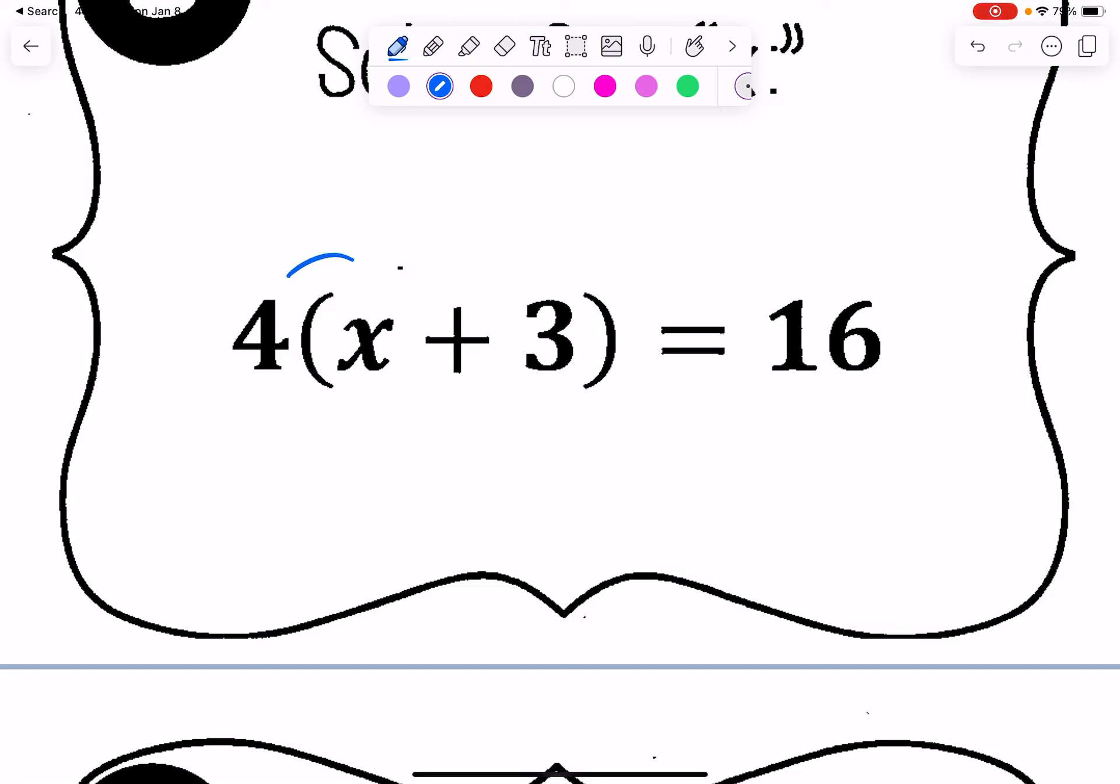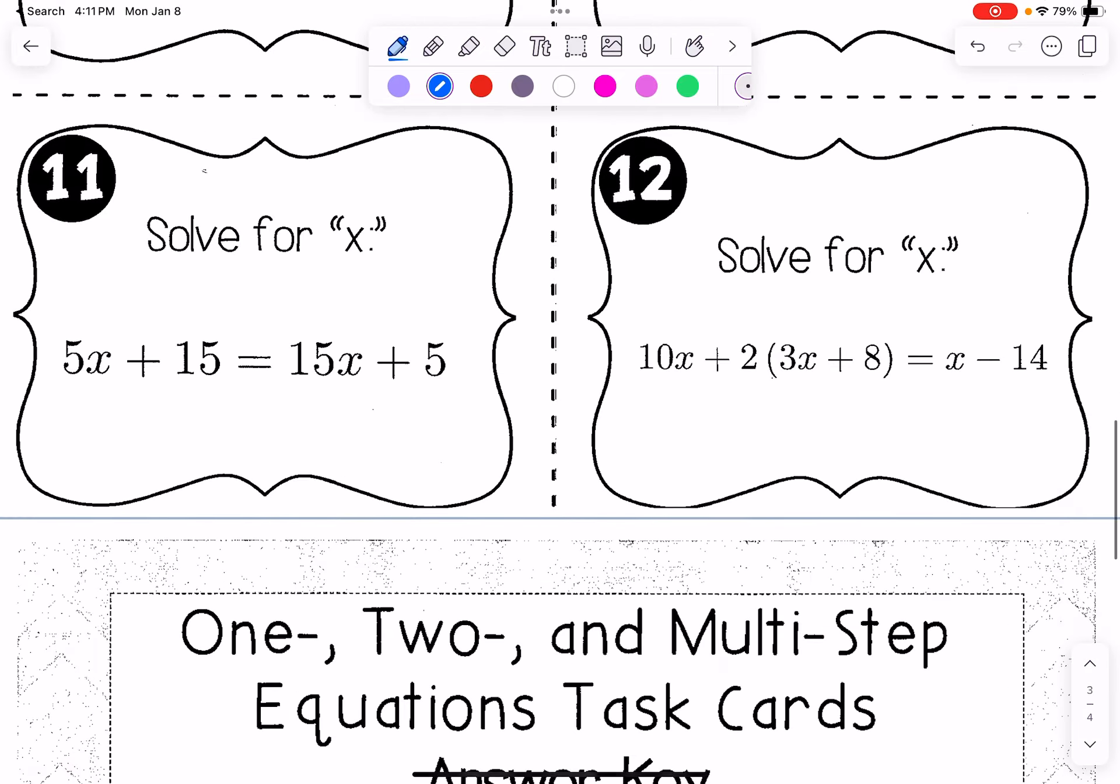For this one, first we have the distributive property. We could also divide both sides by 4, but we'll practice with distributive property. So 4x, 4 times 3 is 12. If you want to use that middle line, remember we just line up the equal signs. So we then subtract 12 on both sides, left with 4x equals 4. Finally, we divide by 4 on both sides. Get x equals 1.